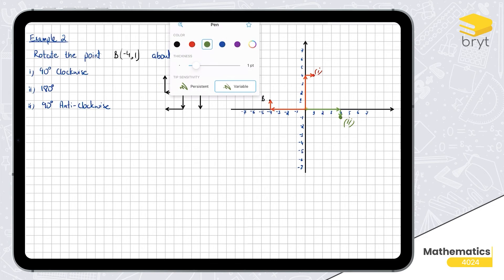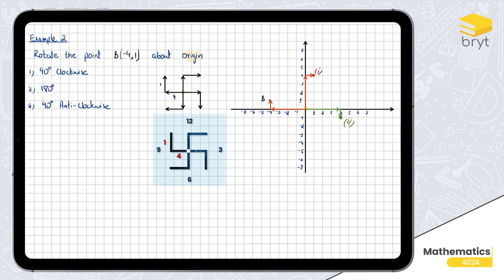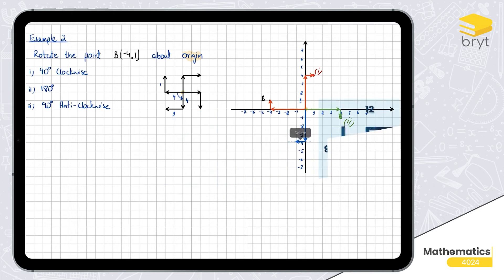Now rotating 90 degrees anti-clockwise — switching to blue. The object is still four units left and one unit up. Rotating anti-clockwise, it goes four down and one left. From the center: four down and one left — that's where we end up. Coordinates: 90° anti-clockwise gives (-1, -4); 180° gives (4, -1); 90° clockwise gives (1, 4).